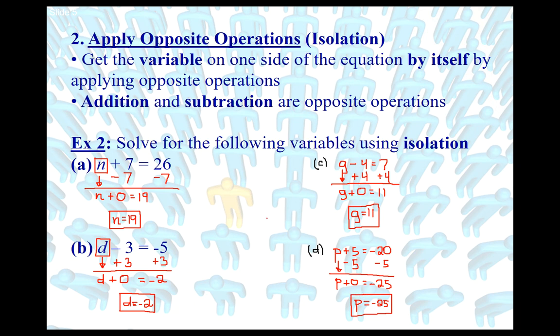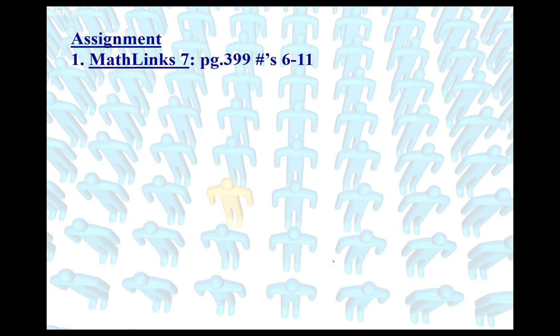Yes, you can use guess and test, but isolation is more important because we're going to build on this process throughout the unit and into higher math courses — it's all going to be about isolation. Right now we need to get this fundamental building block down, despite the equations being simple at this level. Your assignment: complete MathLink 7 textbook page 399, numbers 6 through 11. In the next lesson, we'll look at other one-step equations — level two — which are slightly more complicated.